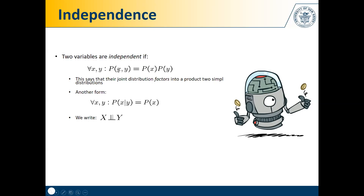Another way of formulating this definition is through conditional probabilities. Two variables are independent if, for all of their possible outcomes or assignments, the probability of X conditioned on Y is just the probability of X. This means the probability of X occurring has nothing to do with the probability of Y occurring. We denote this independence using a specific symbol — this symbol means that X and Y are independent variables.